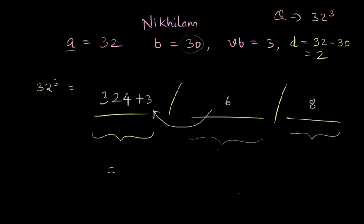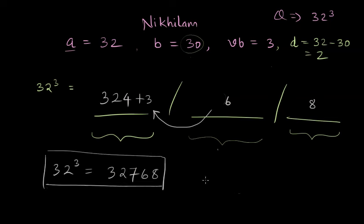So now we have 327 then the next part is 6 and then it's 8 and so this is the cube of 32 and this is how we can complete cube using Nikilam method of cubes.